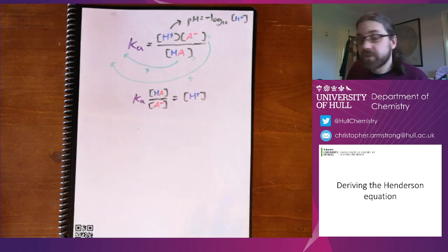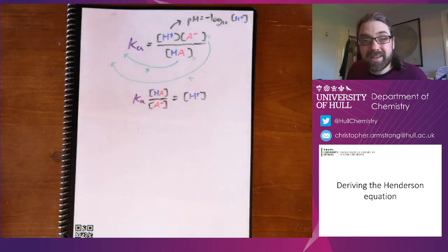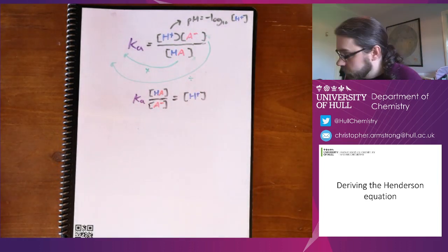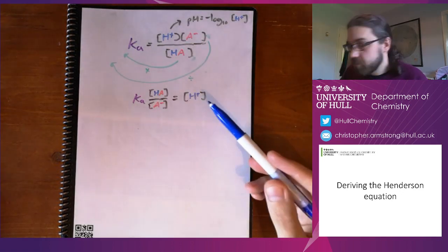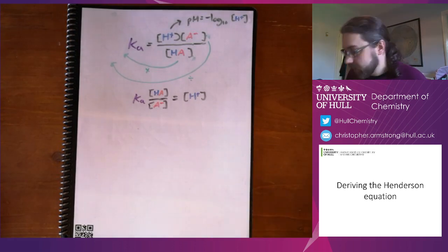Henderson's paper kind of stops there. He goes on a little bit to talk about how the rate of change of this with respect to the ratio works and a few other things. But Henderson generally left it there. Hasselbalch came along a couple of years later and thought, well, why bother just leaving it at this? If we took the log10 of this, we'd get pH directly.